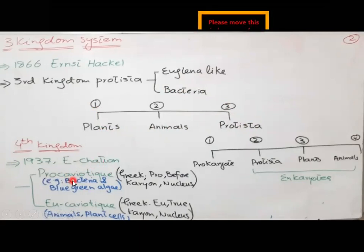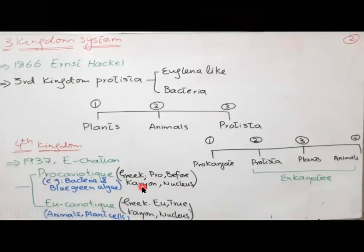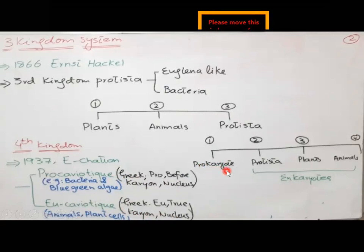After some time, in 1937, the four kingdom system was devised because there was the discovery of prokaryotic and eukaryotic living organisms as separate categories. Prokaryotic is a Greek word — 'pro' means before and 'karyon' means nucleus; examples are bacteria and blue-green algae. Eukaryotic means 'eu' means true and 'karyon' means nucleus; examples are animal and plant cells. So the four kingdom system includes: prokaryotes, Protista, plants, and animals.